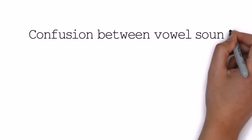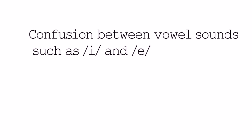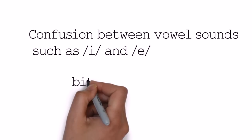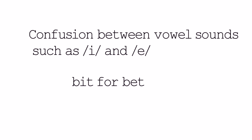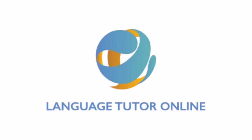And last of all, confusion between vowel sounds and diphthong sounds, such as I and E. You might say 'bit' instead of 'bet' — it might sound like 'bit' for both. So be careful.